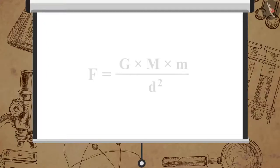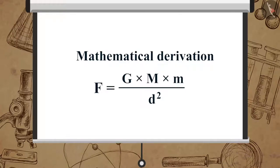Mathematically it is written as F is equal to G multiplied by M multiplied by m upon d square. Now let's see how we can derive the mathematical representation of universal law of gravitation.